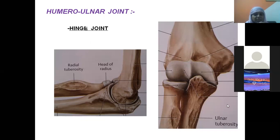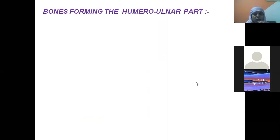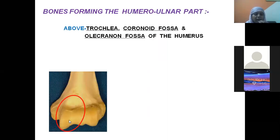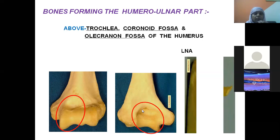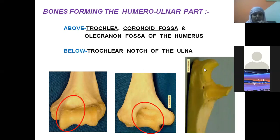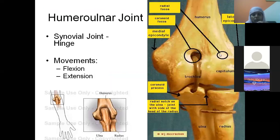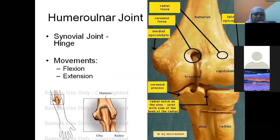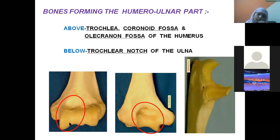The humero-ulnar joint is a hinge joint. Above is the trochlea with the coronoid fossa anteriorly and olecranon fossa posteriorly; below is the trochlear notch of the ulna. It is a synovial hinge joint performing flexion and extension. During flexion, the coronoid process fixes in the coronoid fossa and the head of the radius fixes in the radial fossa.